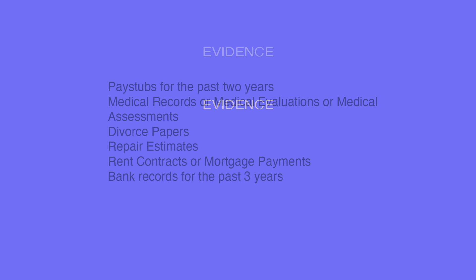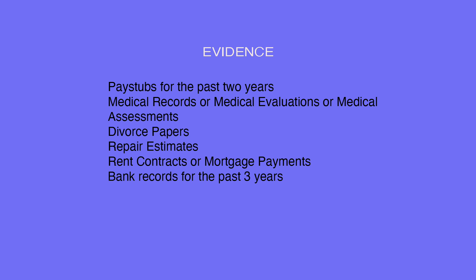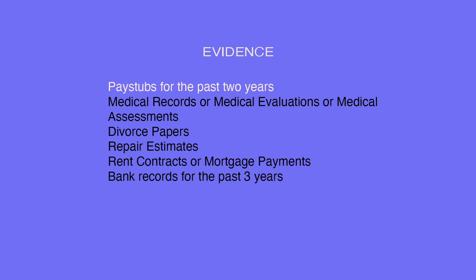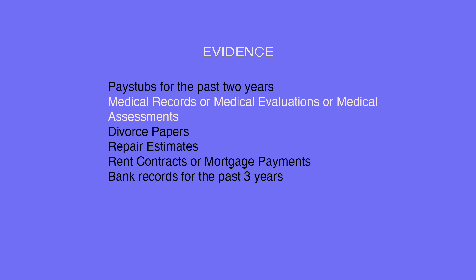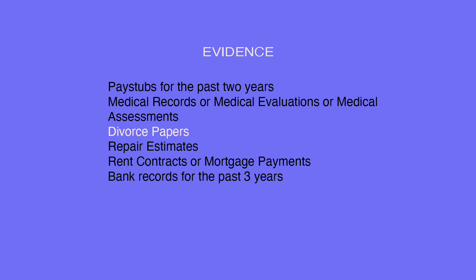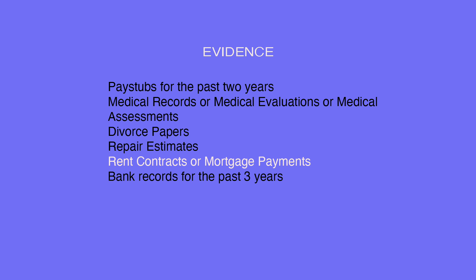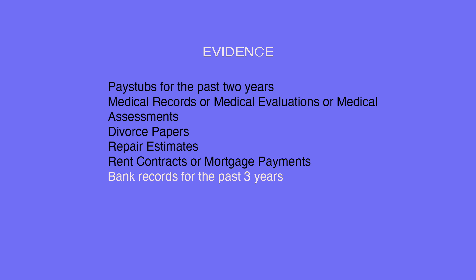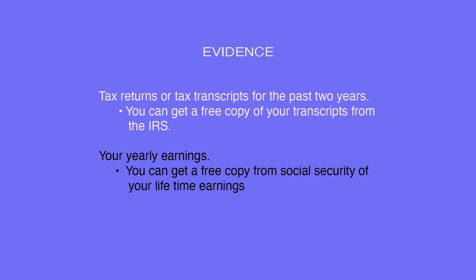Now is the time to gather all the evidence you need to prove your case. The evidence you will need is not limited to the following — every case is different, so some will need more and others less. Evidence includes: pay stubs for the past two years; medical records, evaluations, or assessments; divorce papers; repair estimates; rent contracts or mortgage payments; bank records for the past three years; and tax returns or tax transcripts for the past two years. You can get a free copy of your transcripts from the IRS.